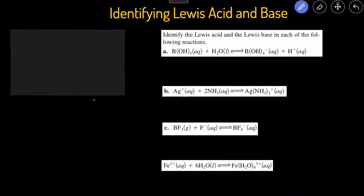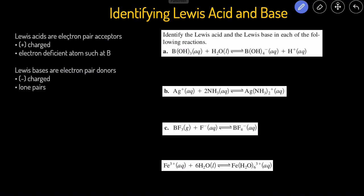Let's start off with the definitions. Lewis acids are electron pair acceptors, while Lewis bases are electron pair donors. That means Lewis bases are going to give up their electrons, and then the Lewis acids are going to accept these electrons.